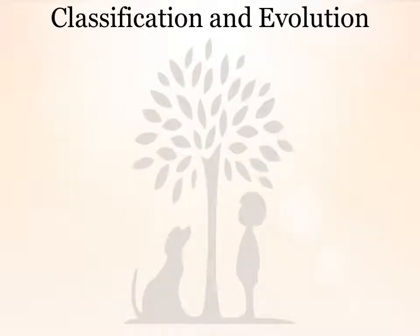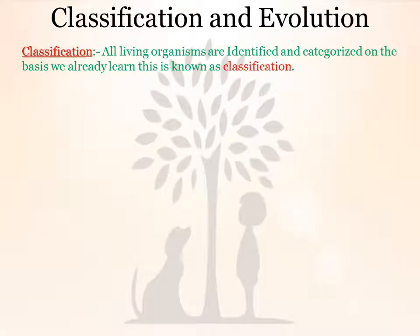Now, classification and evolution. The definition of classification is: all living organisms are identified — all their characters need to be identified — to find which group is most similar for that particular organism which we want to classify. They are then classified and characterized on the basis of the criteria we have already learned. This process is known as classification.